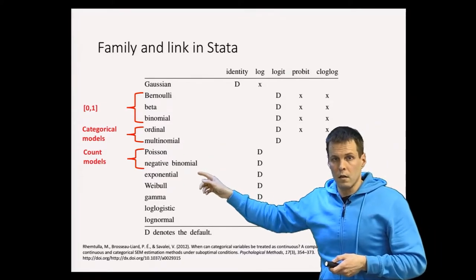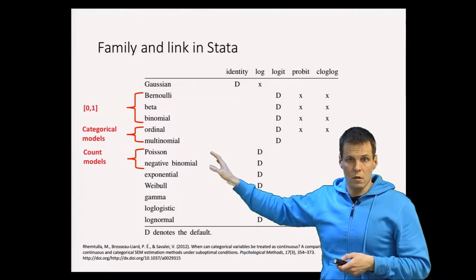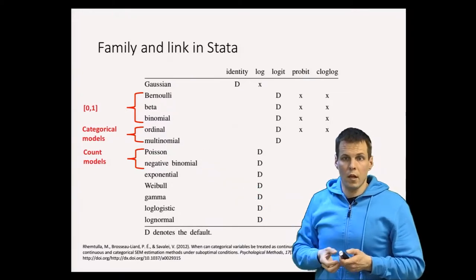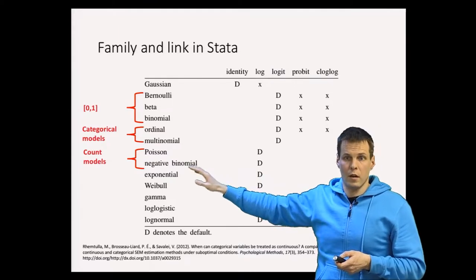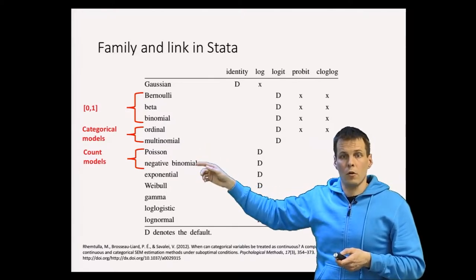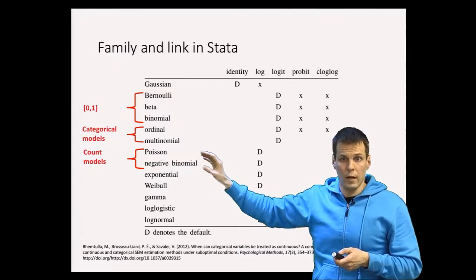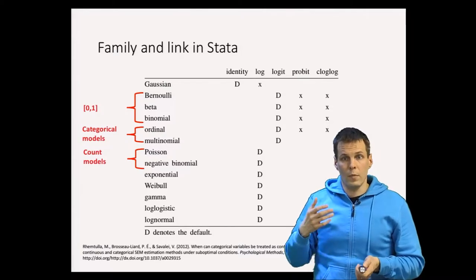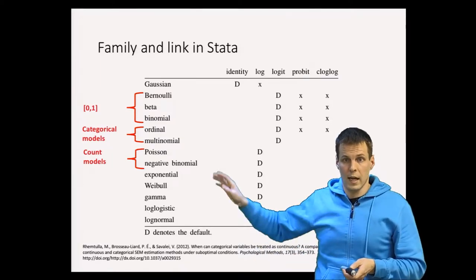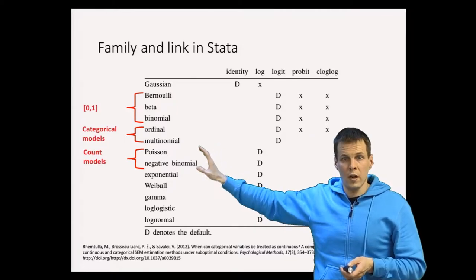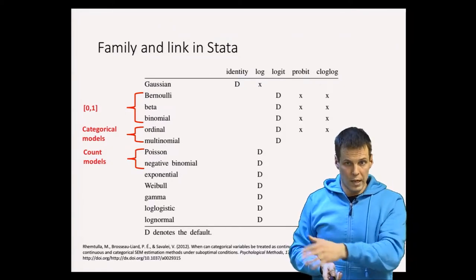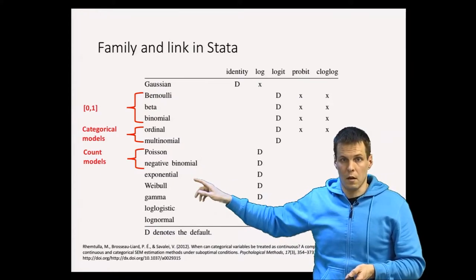Poisson and negative binomial distributions are for count models. The choice between them is mostly an empirical matter. Both assume a count of independent events — for example, how many people die in a country in a year. Negative binomial regression is used when the variation in the data exceeds what the Poisson model would predict, known as overdispersion.